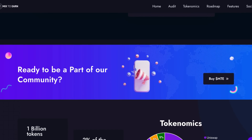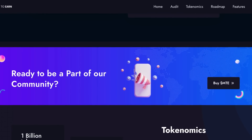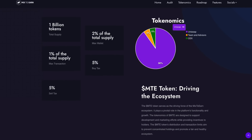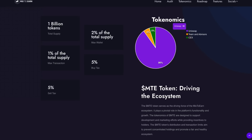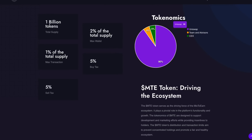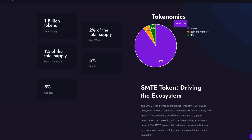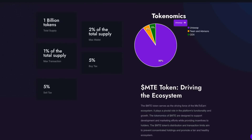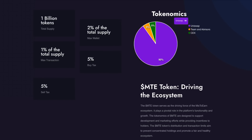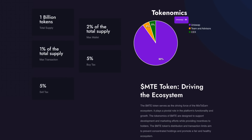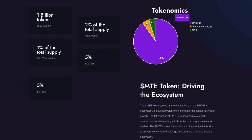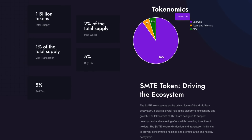And as we can see, if you're ready to be a part of their community, you'll be able to buy your own MTE tokens on Uniswap. Up next are the tokenomics: there are 1 billion tokens, 2% of the total supply for Max Wallet, 1% of the total supply for Max Transaction, 5% buyback and 5% sell tax. We can see 90% is going to Uniswap, 5% to Team and Advisors, and 5% to CEX. The MTE token serves as the driving force of the Mix2Earn ecosystem, playing a pivotal role in the platform's functionality and growth. The tokenomics of MTE are designed to support development and marketing efforts while providing incentives to holders. The MTE token's distribution and transaction limits aim to prevent concentrated holdings and promote a fair and healthy ecosystem.